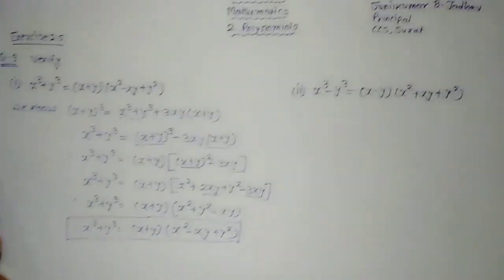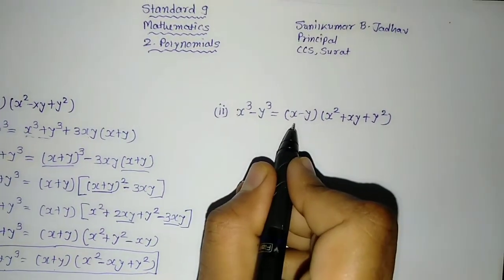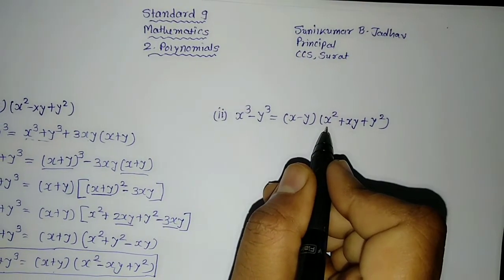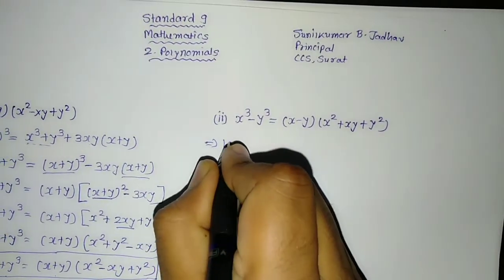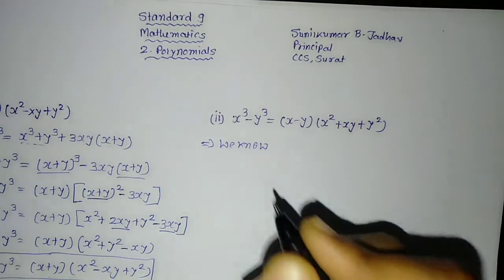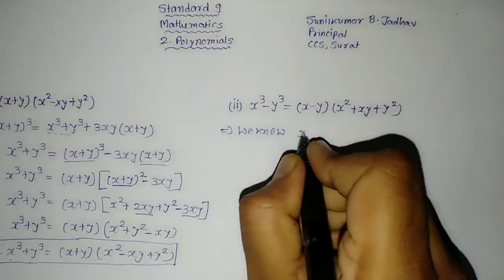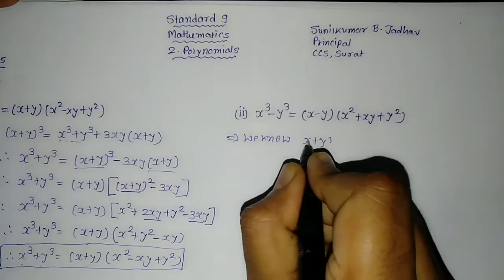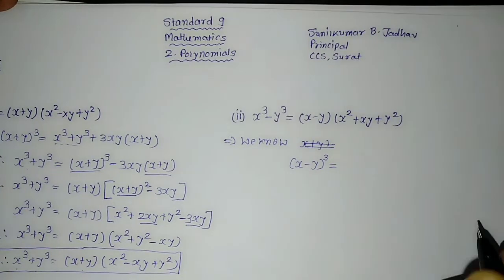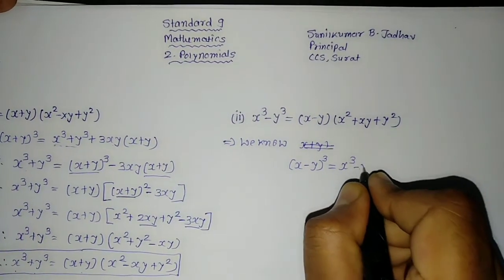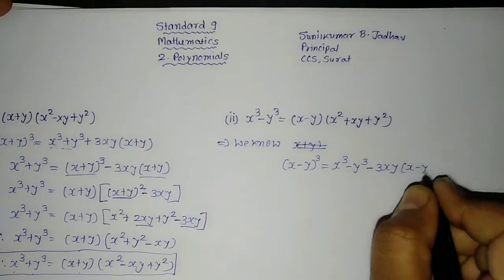Now let us see the second one. Again, what we want to prove: x cube minus y cube is equal to x minus y into bracket x square plus xy plus y square. We will start with what we know. The formula we know is: x minus y whole cube is equal to x cube minus y cube minus 3xy into bracket x minus y. This is the formula.